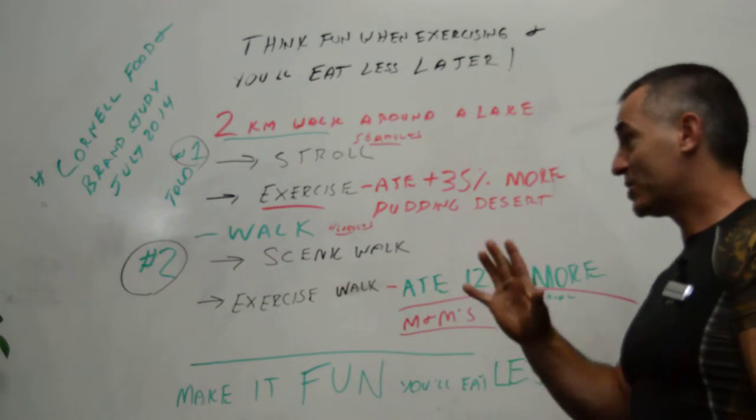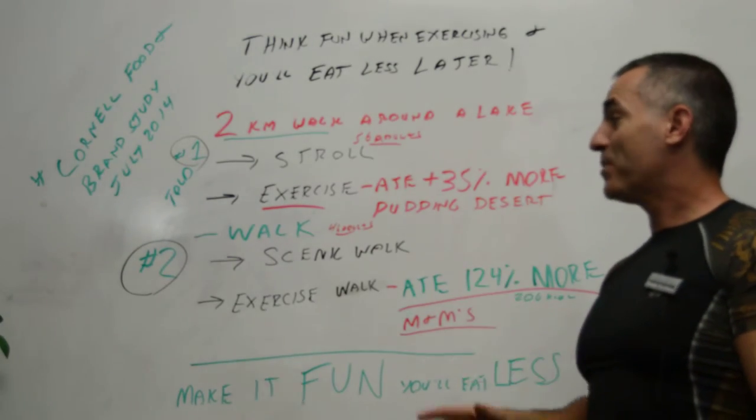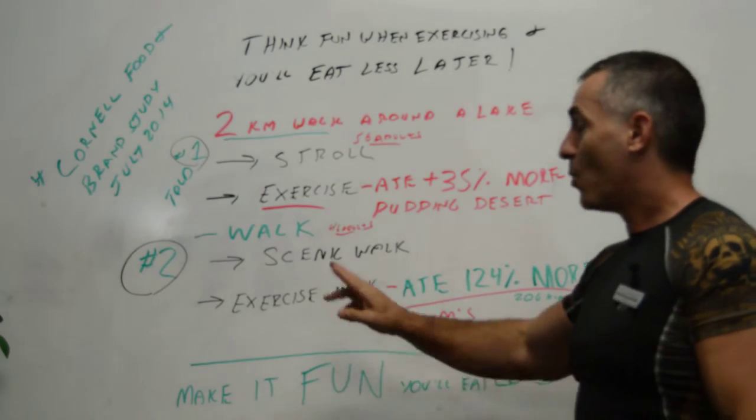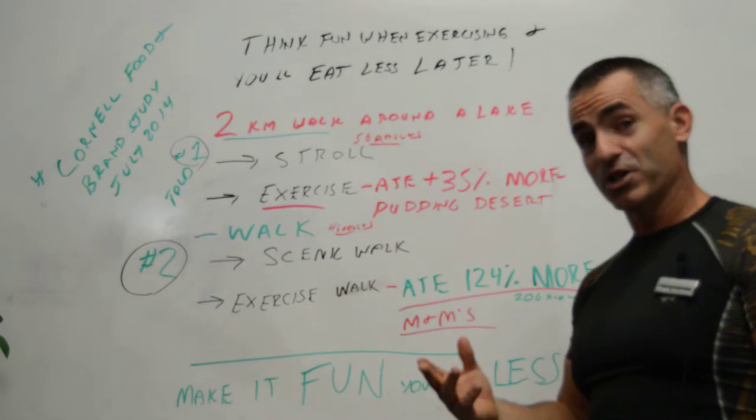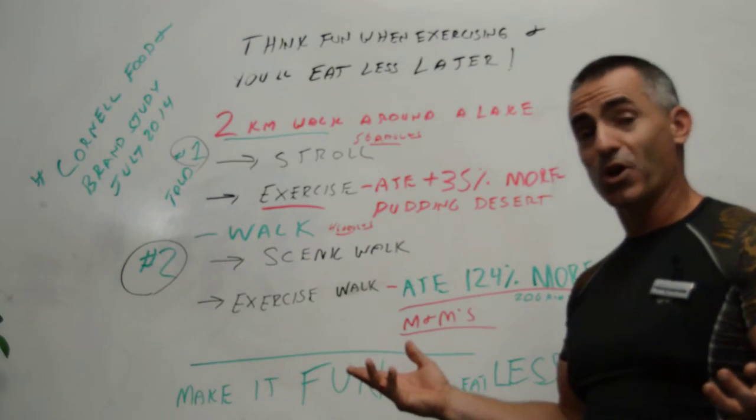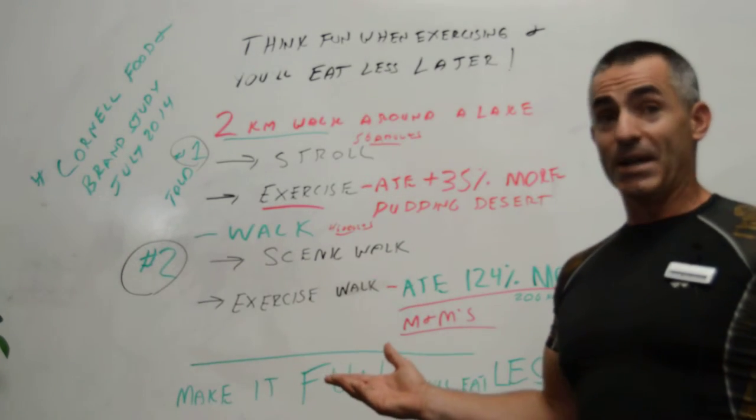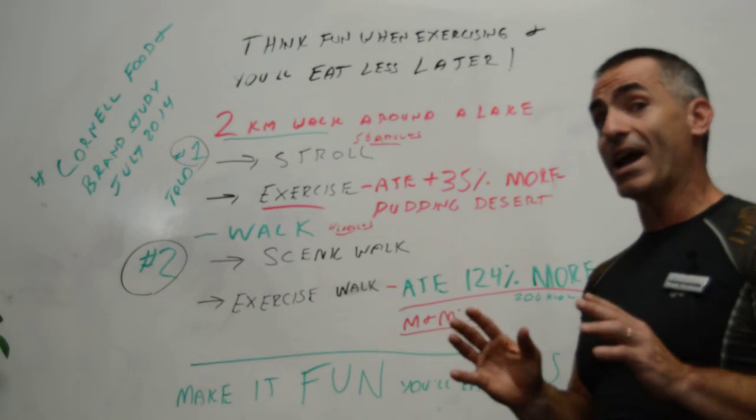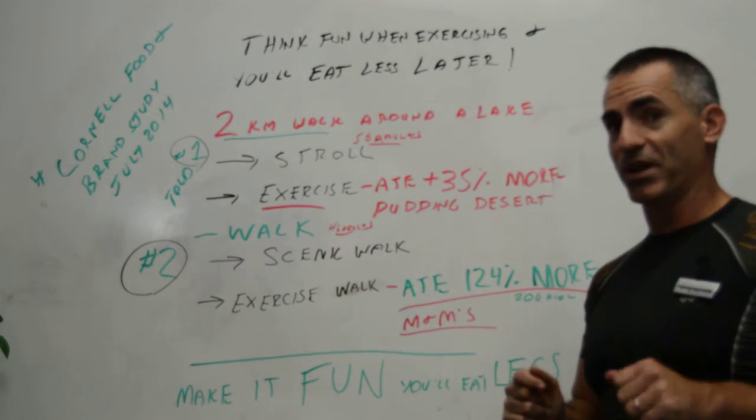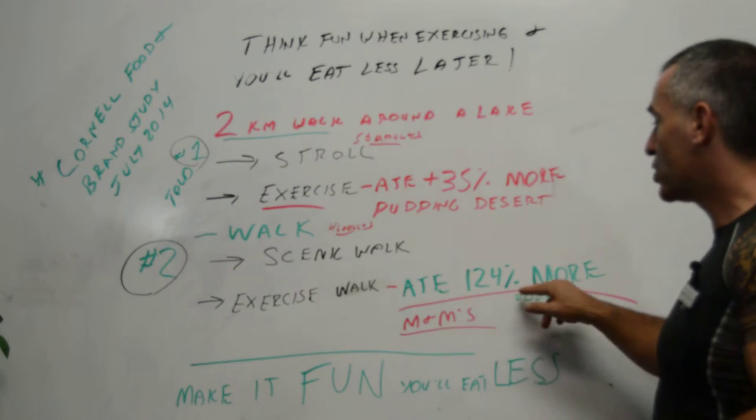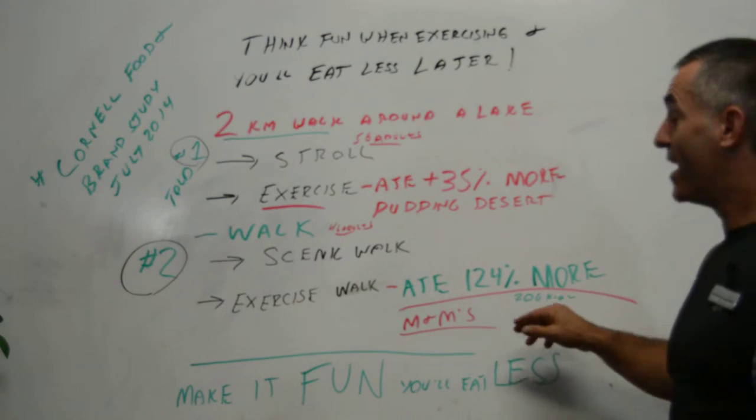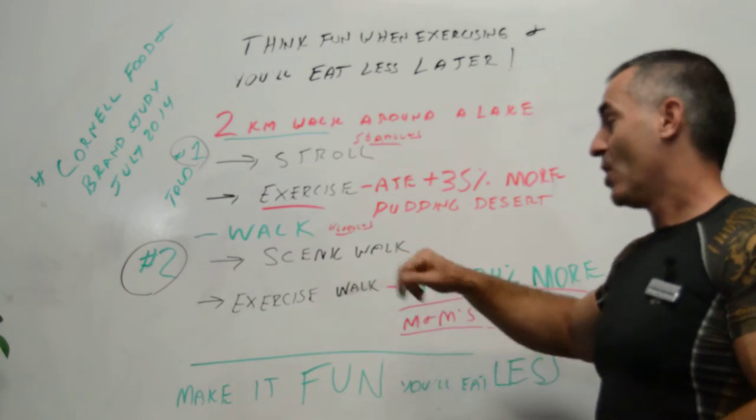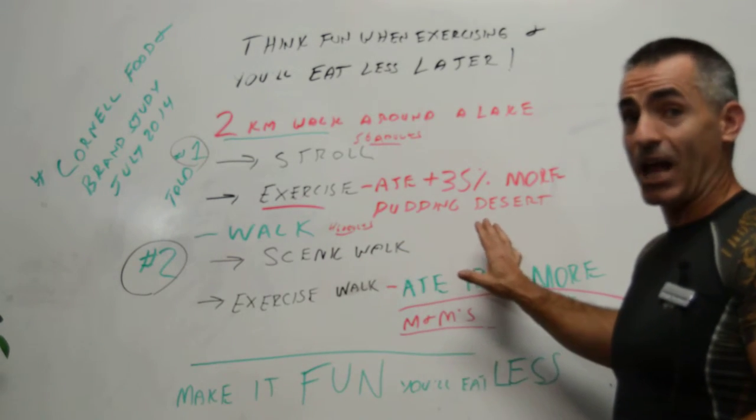The group that was on the exercise walk, when they got done and went to lunch, they were fed M&Ms. The group that thought they were on the exercise walk actually ate 124% more M&Ms than the group that thought they were on the scenic walk, or about 206 calories total.